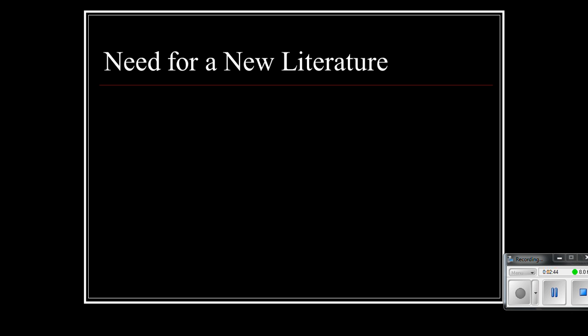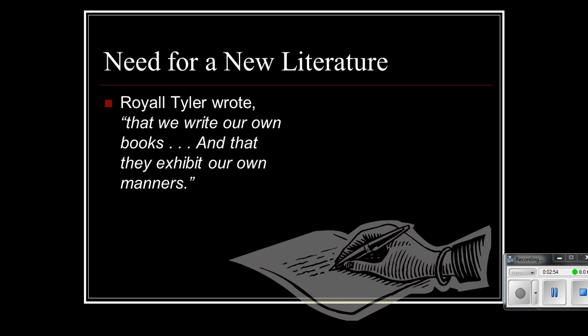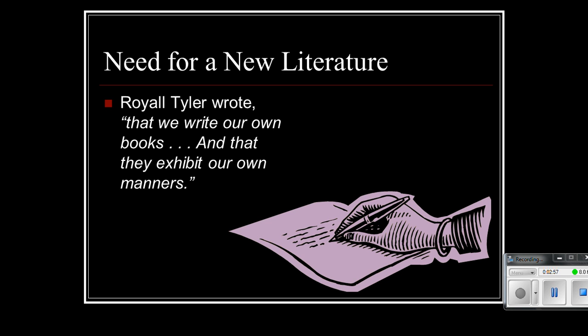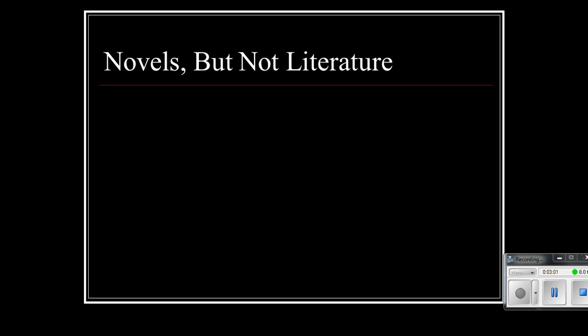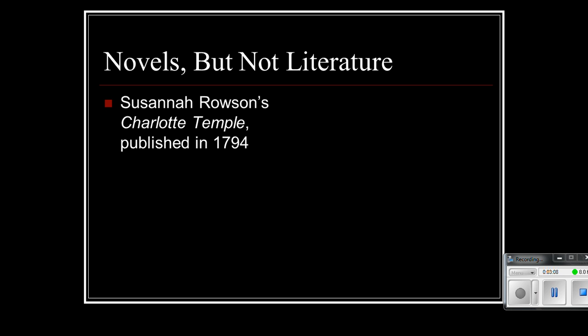In America, we found that now that we had a new nation and a new government and a new system, we needed to have a literature that really defined that. A gentleman named Royale Tyler wrote, we need to write our own books, and that they exhibit our own manners. Up until this time, however, we really didn't have literature. We had novels. There was a woman by the name of Susanna Rousen who wrote a novel called Charlotte Temple, which was published in 1794. It was really pretty much a morality novel — a cautionary tale for young women who wanted to move off and leave the farm and leave their home and go off into the city. All kinds of horrible things happened to Charlotte Temple because she didn't follow the right conventions.